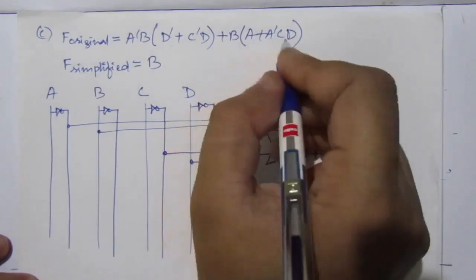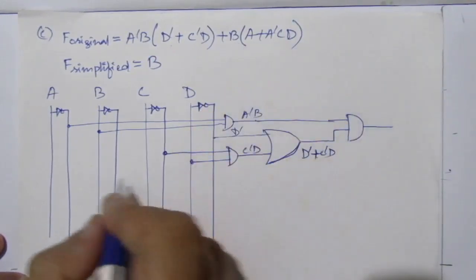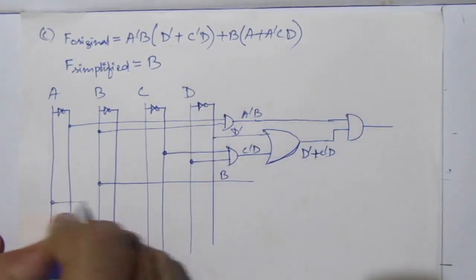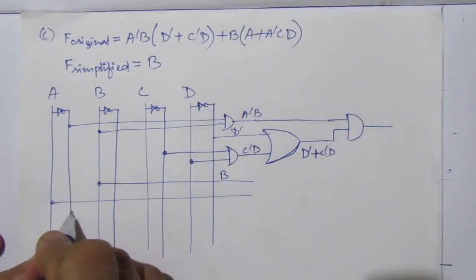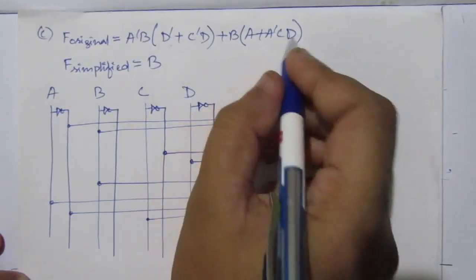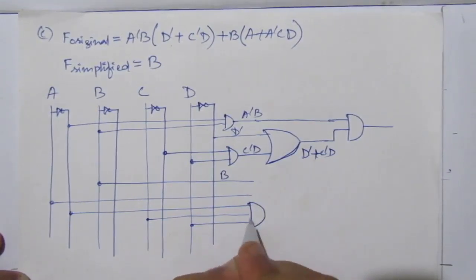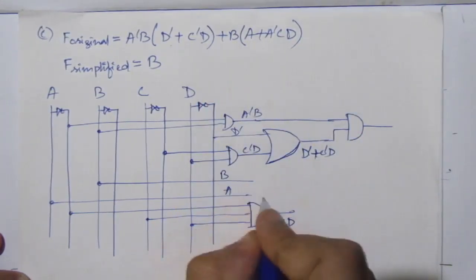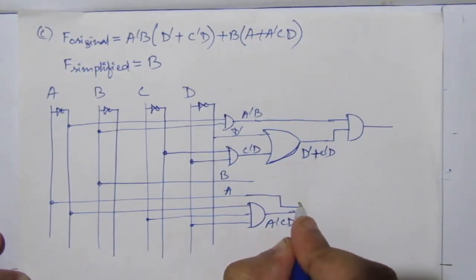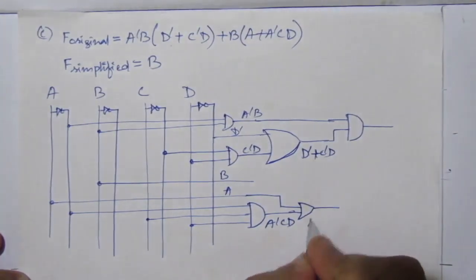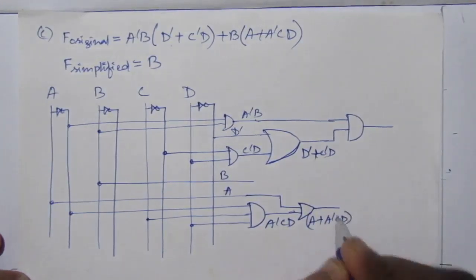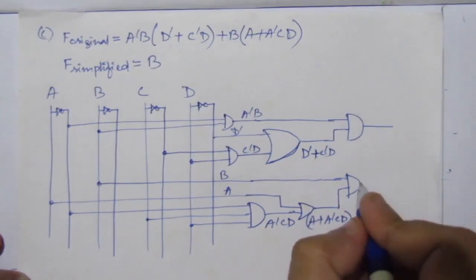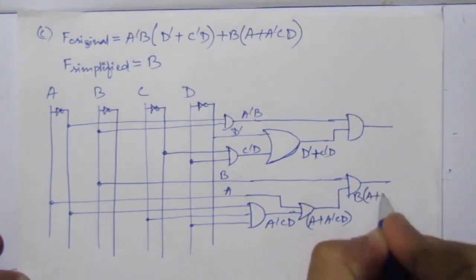The second part is b·(a + ā·c·d). Draw a line from b. For ā·c·d: ā is this line, c is this line, and d is this line — use an AND gate to get ā·c·d. Then add a using an OR gate to get a + ā·c·d. Then multiply with b using an AND gate to get b·(a + ā·c·d).